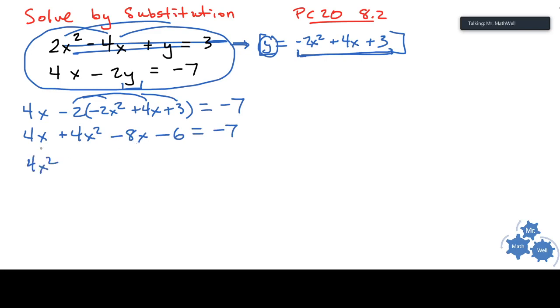So it's going to be plus four x squared minus eight x minus six equals negative seven. I'm going to bring that negative seven over, combine any like terms. So I'm going to have a four x squared here. This x term and this x term, four minus eight is minus four x. And then I'm going to add seven. So negative six plus seven over here is going to be plus one equals zero.